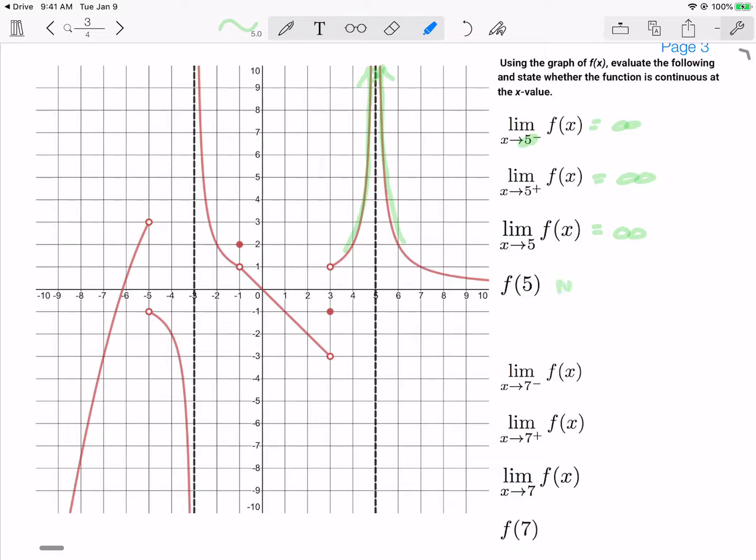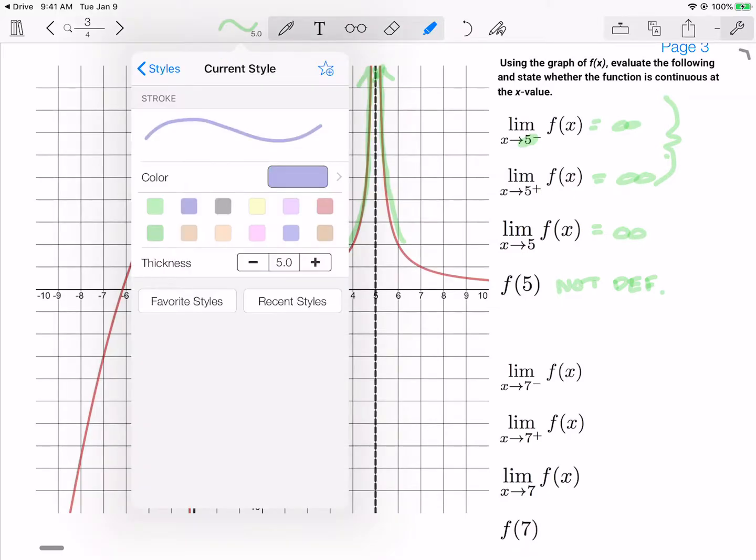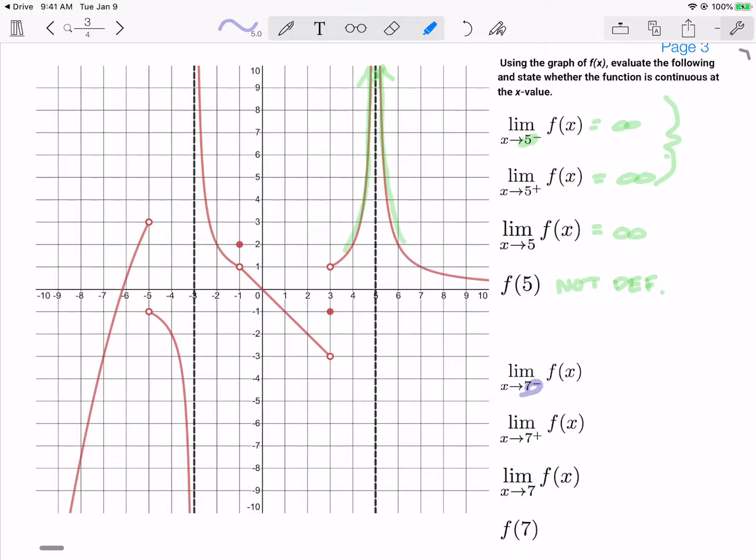And f of 5 is not defined because we've got another vertical asymptote, which is indicated by these limits telling us that we have a vertical asymptote.